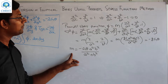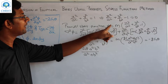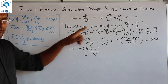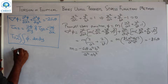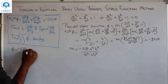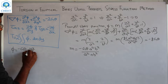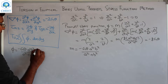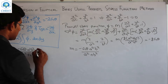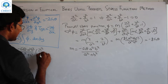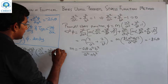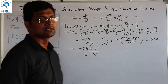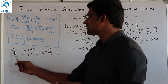Now with the value of m, we get the Prandtl Stress Function φ. So φ = -Gθ·a²b²/(a² + b²) times (x²/a² + y²/b² - 1). This is the expression for the Prandtl Stress Function φ for an elliptical cross-section.